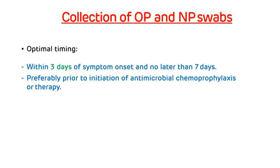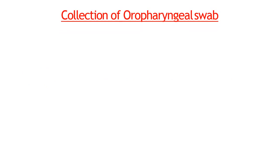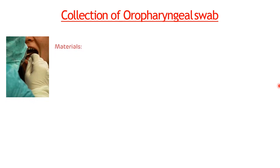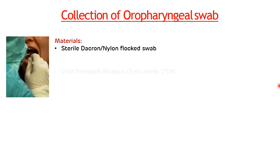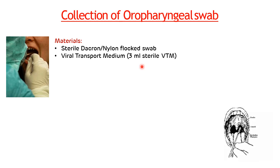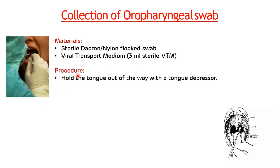For the oropharyngeal swab collection, the materials required are: first, a sterile Dacron or nylon swab; and second, viral transport medium with a capacity of 3 ml.